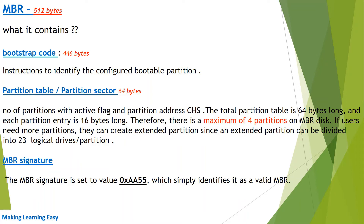The bootstrap program takes the help of the partition table to find the active partition. The partition table contains details about the number of partitions present in the hard disk, the size, and the address of the partitions, including which is the active partition. The size of the partition table is 64 bytes.